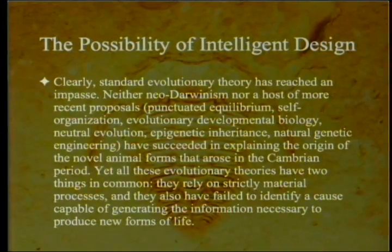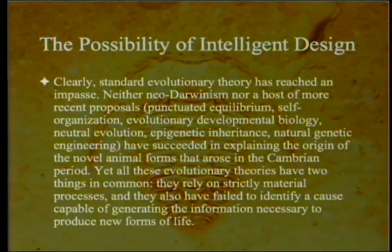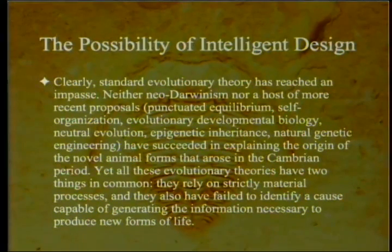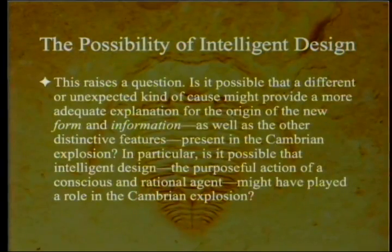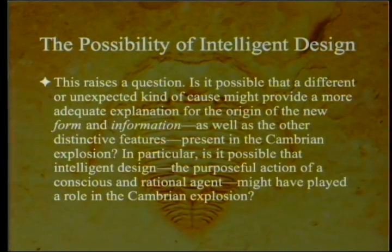Clearly, standard evolutionary theory has reached an impasse. Neither neo-Darwinism nor more recent proposals—punctuated equilibrium, self-organization, evolutionary developmental biology, neutral evolution, epigenetic inheritance, natural genetic engineering—have succeeded in explaining the origin of the novel animal forms that arose in the Cambrian period. All these evolutionary theories have two things in common: they rely on strict material processes, and they have failed to identify a cause capable of generating the information necessary to produce new forms of life. Is it possible that an intelligent design—the purposeful action of a conscious and rational agent—might have played a role in the Cambrian explosion?